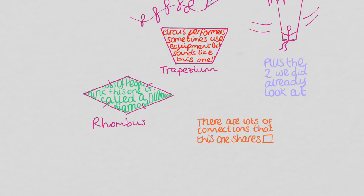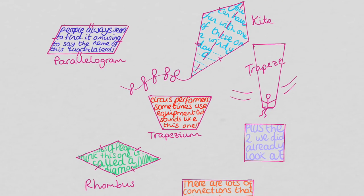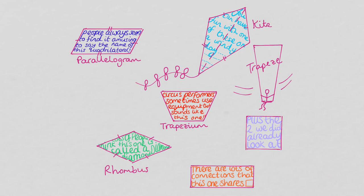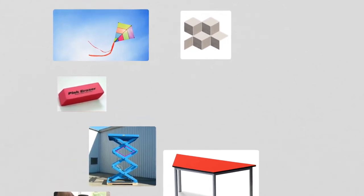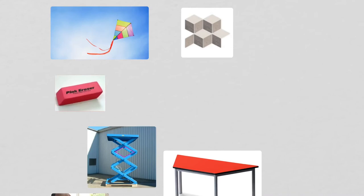And then in purple, I've written plus the two we did already look at. And so that would be our square and our rectangle. And I've written inside the rectangle, there are lots of connections that this one shares. So a rectangle and a square have lots of features in common with some of these other quadrilaterals. So we're just going to have a quick look just now at some real life examples. So what quadrilaterals can you see on this page here? Let's have a look.